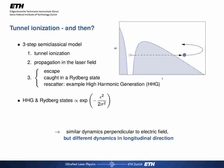Both the number of Rydberg states and the number of high harmonic generation events strongly decline with increasing ellipticity of the laser. While both processes show similar dynamics transverse to the electric field, explaining the similar dependence on ellipticity, they have different dynamics longitudinal to the laser field because the ionization occurs in different parts of the optical cycle.